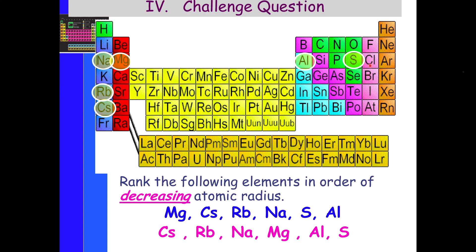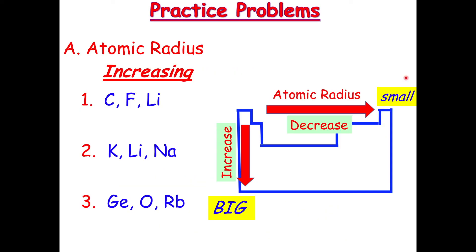If we did ionic radius, it would be a little different — sulfur would be the largest ion. We're going to practice a bit more, so pause the video and check the answers. I want you all to have a great day.